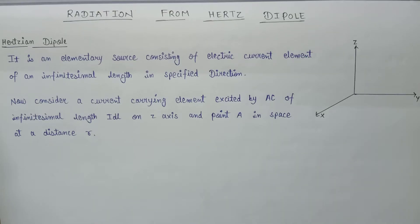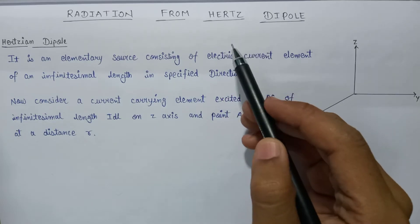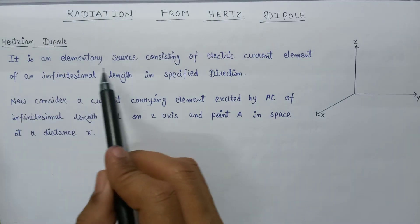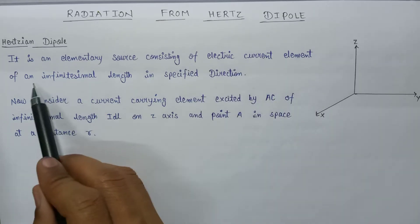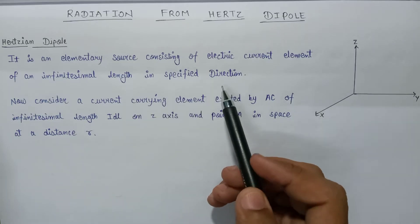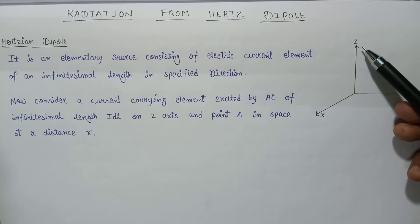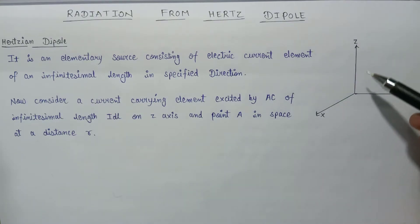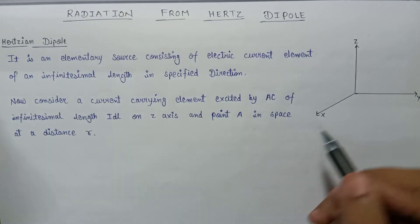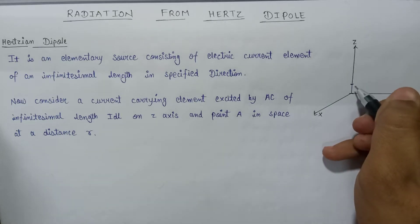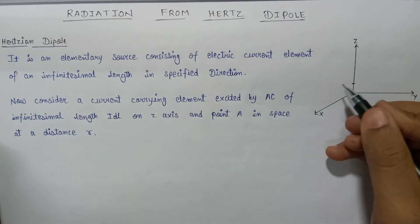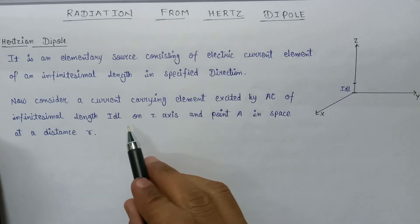Welcome. In this lecture we are going to discuss about radiation from a Hertz dipole. A Hertzian dipole is an elementary source consisting of an electric current element of infinitesimal length in a specified direction. Here is a vertically oriented z-axis, horizontally oriented y-axis, and the x-axis is perpendicular to the plane of paper. Here is the current carrying element excited by AC of infinitesimal length dl.